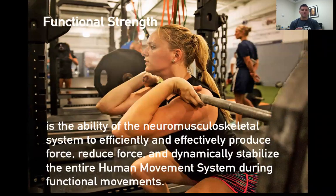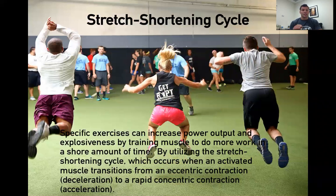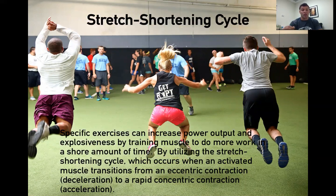Functional strength is the ability of the neuromuscular system to efficiently and effectively produce force, reduce force, and dynamically stabilize the entire human movement system during functional movements. The stretch shortening cycle: specific exercises can increase power output and explosiveness by training muscles to do more work in a short amount of time by utilizing the stretch shortening cycle, which occurs when activated muscles transform from eccentric contraction deceleration to a rapid concentric contraction acceleration.